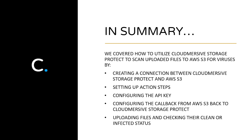And that's it! In summary, we covered how to utilize CloudMersive Storage Protect to automatically scan any files uploaded to an AWS S3 bucket through the following steps: creating a connection between CloudMersive Storage Protect and AWS S3, setting up action steps, configuring the API key, configuring the callback from AWS S3 back to CloudMersive Storage Protect, and uploading files and checking their clean or infected status. If you have any questions or would like to find out more, I've included a link in the description below where you can contact our knowledgeable sales team, who will be happy to help. Thanks so much for watching, and be sure to check back in for more tutorials and tips.